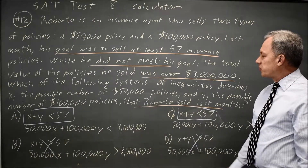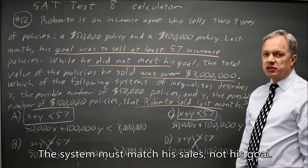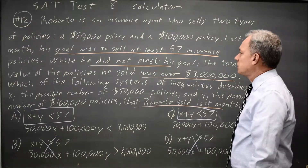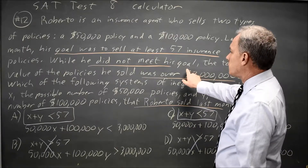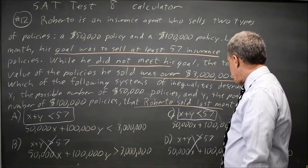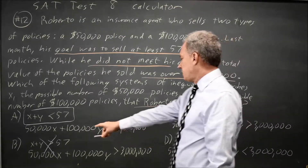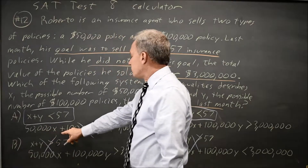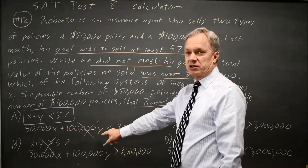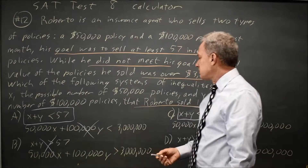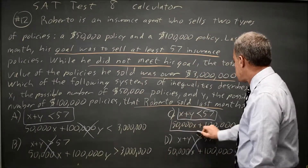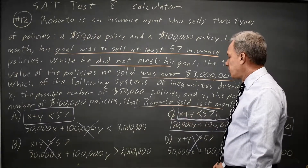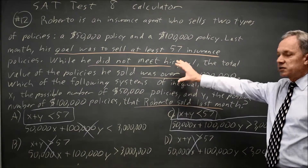What we're trying to do is find the system that matches, and almost always for this question you'll want to cross out wrong answers until only one choice is left. They say the total value of policies he sold was over $3 million. One option shows total value under $3 million — $50,000 times the number of $50,000 policies plus $100,000 times the number of $100,000 policies less than $3 million. The correct inequality shows that same quantity greater than $3 million.